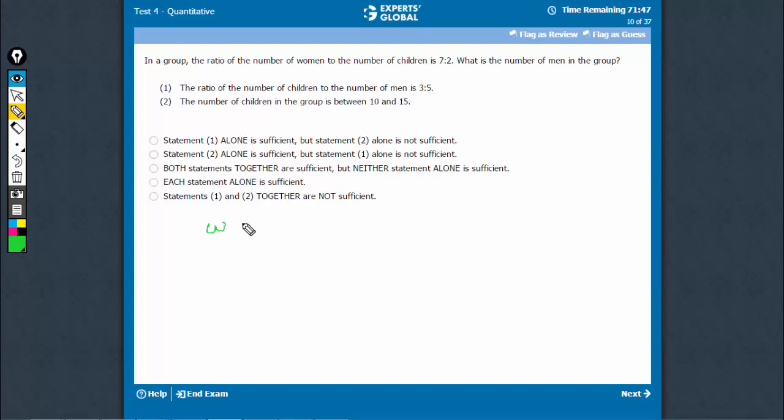The question tells us that the ratio of women to children is 7 to 2. Statement 1 tells us that the ratio of number of children to men is 3 to 5.